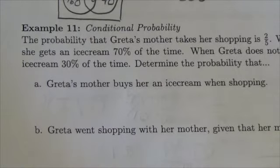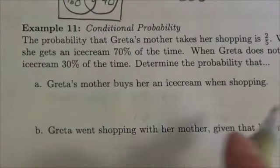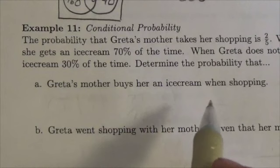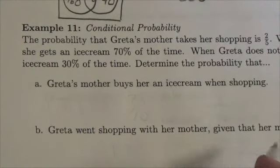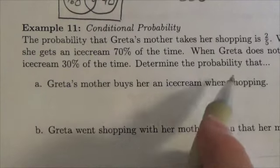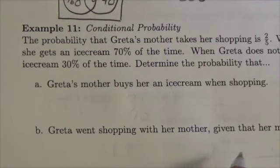Hi everyone. This is the IB probability and set theory package and this is the section on conditional probability. This is example 11. The probability that Greta's mother takes her shopping is two-fifths. And when Greta goes shopping with her mother, she gets an ice cream 70% of the time. When Greta does not go shopping with her mother, she gets an ice cream 30% of the time.